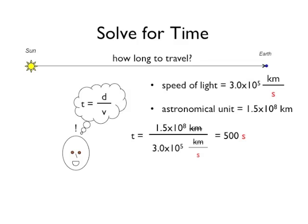In this example, light from the sun travels one astronomical unit, or 1.5 times 10 to the 8 kilometers, at a speed of 3 times 10 to the 5 kilometers per second. So the time it takes for the light from the sun to reach the earth is 500 seconds, or just over 8 minutes.